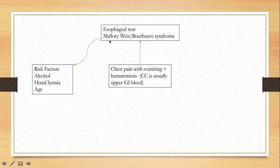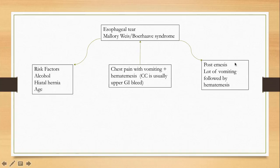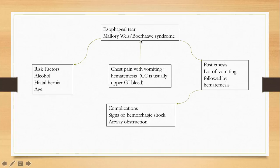Risk factors: alcohol is a big risk factor for Mallory-Weiss tear, along with hiatal hernia and older age. For Boerhaave syndrome, the risk factor is heavy vomiting and hematemesis. Complications are serious — upper GI bleed is more dangerous than lower GI bleed because patients are hemorrhaging and also at high risk for aspiration and upper airway obstruction. These patients can develop hemorrhagic shock, so the situation must be managed urgently.